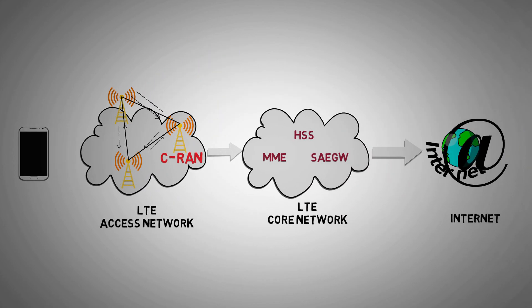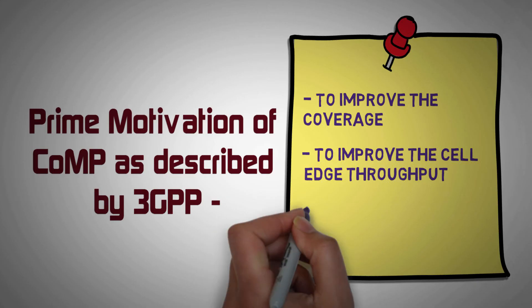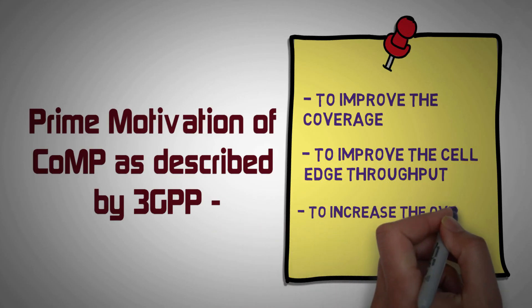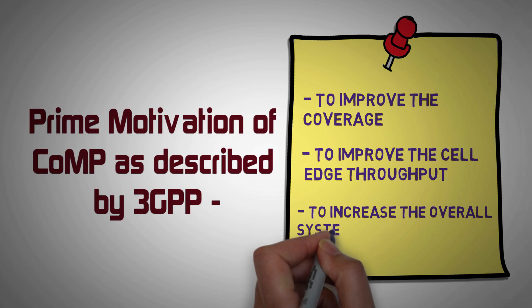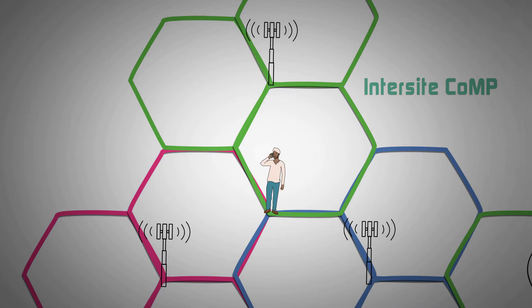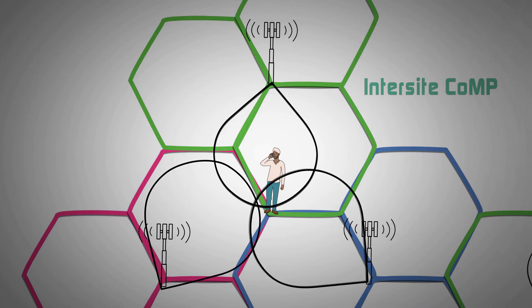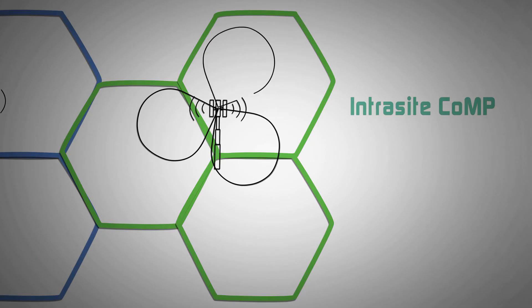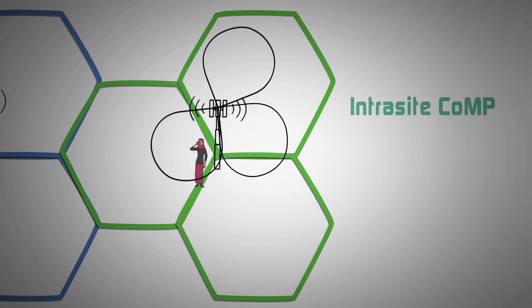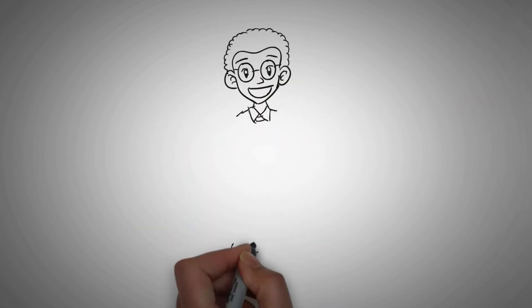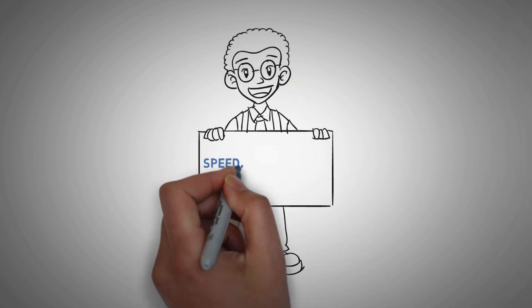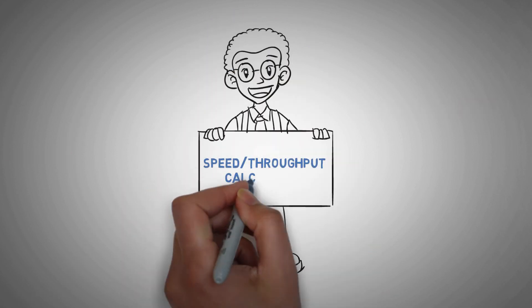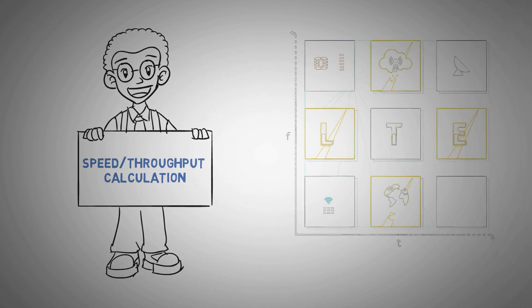Coordinated Multipoint enhances the overall system performance through dynamic coordination among multiple geographically separated eNodeBs, or cells from the same eNodeB, for transmission and reception. In our next video, we will see how throughput is calculated. You can post your doubts in the comments section. Happy Learning!